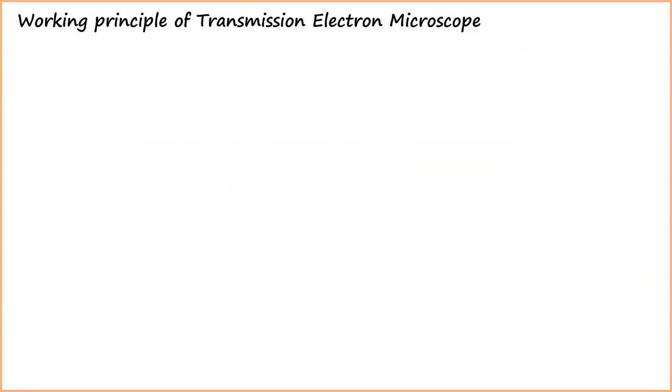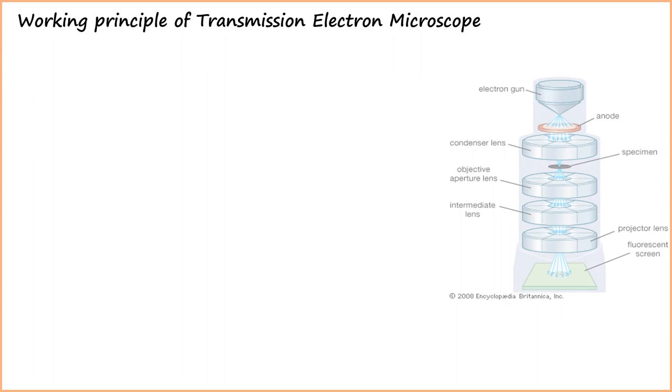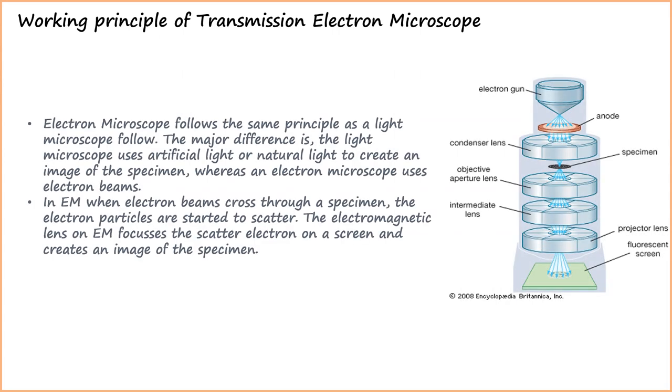Now we will discuss the working principle of a transmission electron microscope. Electron microscope follows the same principle as a light microscope. The major difference is the light microscope uses artificial light or natural light to create an image of the specimen, whereas an electron microscope uses electron beams.